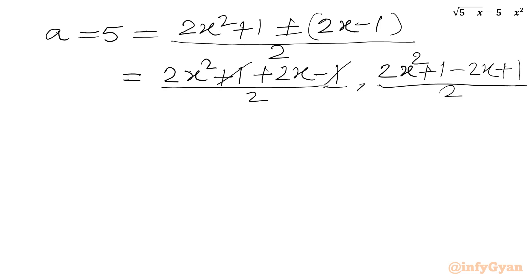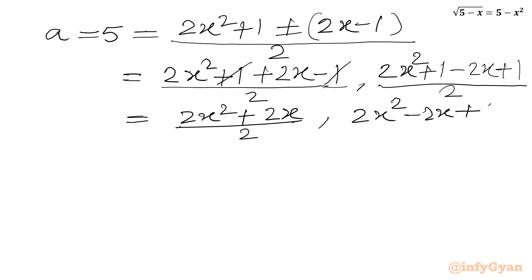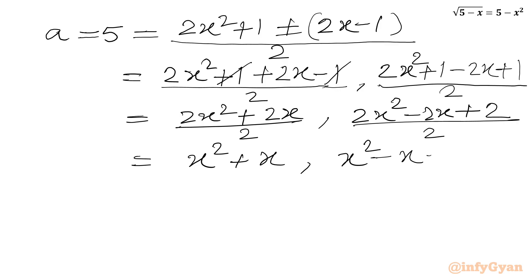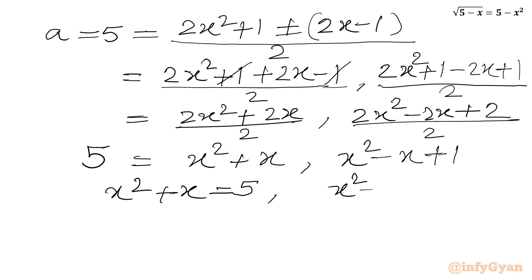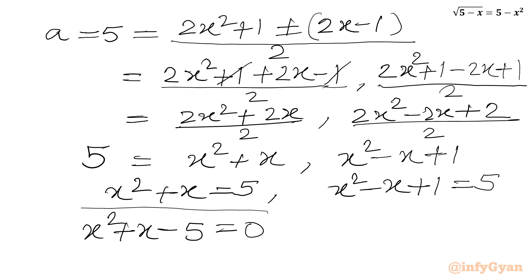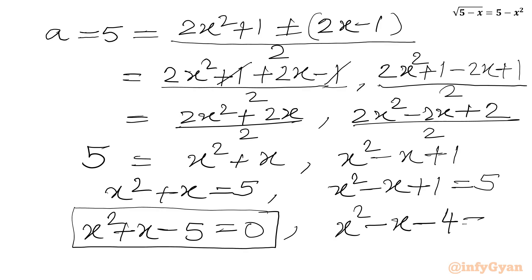With the plus sign we get (2x² plus 2x) over 2, which simplifies to x² plus x. With the minus sign we get (2x² minus 2x plus 2) over 2, which gives x² minus x plus 1. Since the left-hand side is 5, we get two equations: x² plus x equals 5, giving x² plus x minus 5 equals 0, and x² minus x plus 1 equals 5, giving x² minus x minus 4 equals 0.